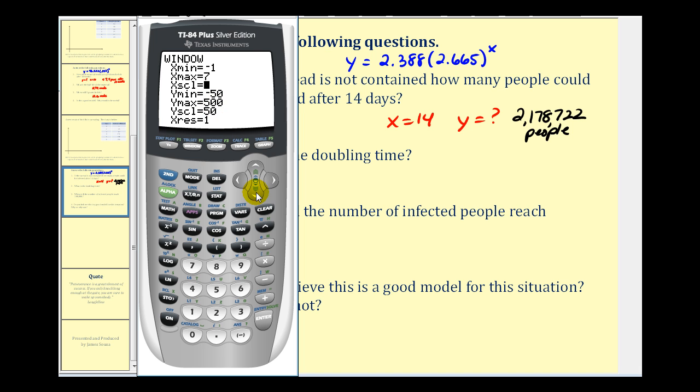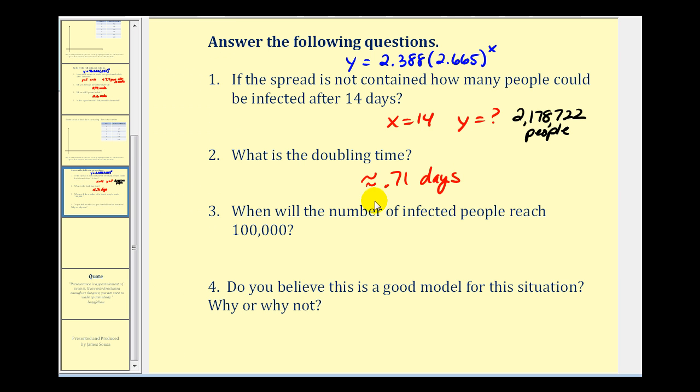However, to do that, we're probably going to have to adjust the window because 4.8 may not show up if we have a maximum y value of 500. So let's go ahead and change the y axis from negative one to eight, and then press graph. So there's our exponential function, there's our horizontal line, and the x value of this point of intersection would represent the doubling time. So let's go ahead and press second, trace, option five, enter, enter, and then when it says guess, let's go ahead and move the cursor closer to that point of intersection. And enter one more time. So it looks like the doubling time is approximately .71 days. Now I realize we could have used the formula to determine the doubling time, but it's also nice to be able to utilize technology to answer this type of question because we can see it visually.